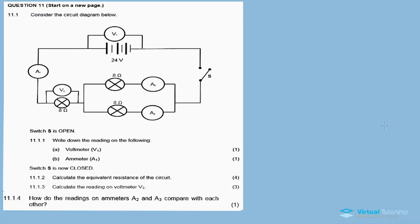We'll focus on Question 11 on electric circuits. 11.1: Consider the circuit diagram below. The circuit has a power source of 24 volts connected to voltmeter V1, ammeters A2 and A3, and an 8 ohm bulb connected in parallel with an 8 ohm resistor. This parallel connection is also connected in series with another 8 ohm bulb. Switch S is open.